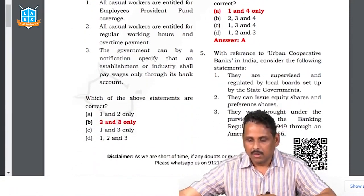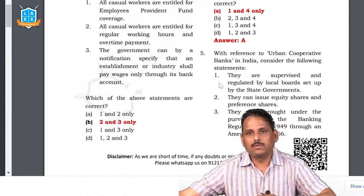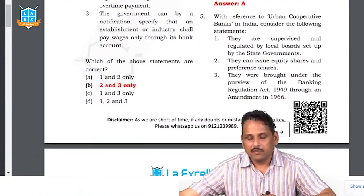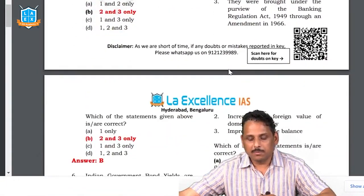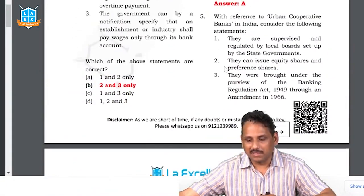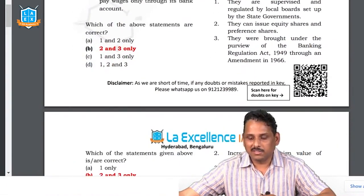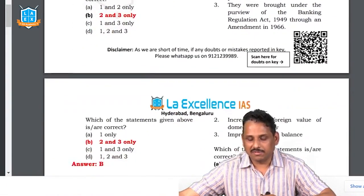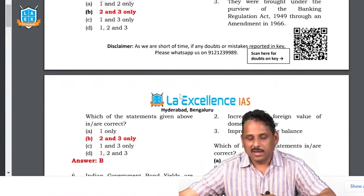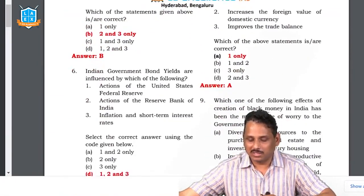Urban cooperative banks are today regulated by RBI. If you know that particular point you can find the answer, because the first statement is wrong itself. Among the choices, two and three is the answer.